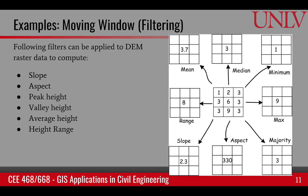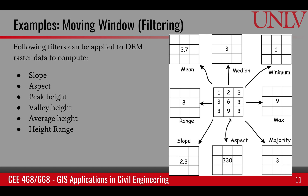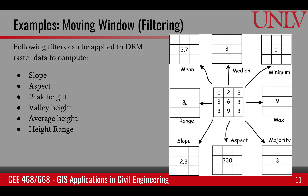For example, with DEM data we could run a slope filter, which takes all nine values and computes a new value for the middle pixel representing slope. Aspect is the direction of the slope. The peak height would be the maximum value inside the window. The minimum value would be the lowest value in the window. The average height could be the mean, median, or mode of the window. And the height range would be the difference between the maximum and minimum values. Many other similar moving windows can be defined in a similar way.